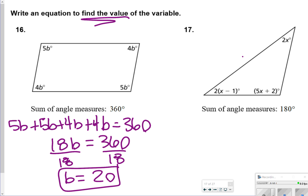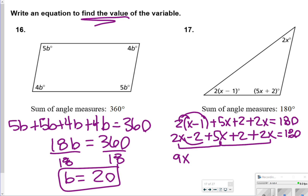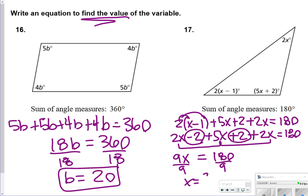For number 17, we have two parentheses: x minus 1 plus 5x plus 2 plus 2x equals 180. Distributing: 2x minus 2 plus 5x plus 2 plus 2x equals 180. Combining like terms — 2x plus 5x is 7x, plus 2x is 9x, and negative 2 plus 2 cancel out — so 9x equals 180. Dividing both sides by 9 gives x equal to 20.